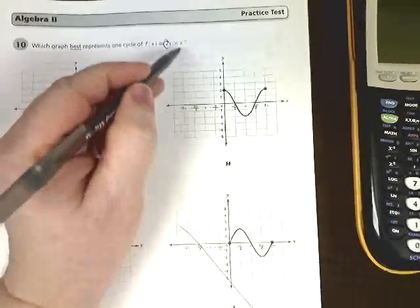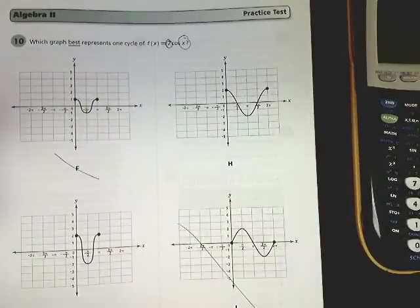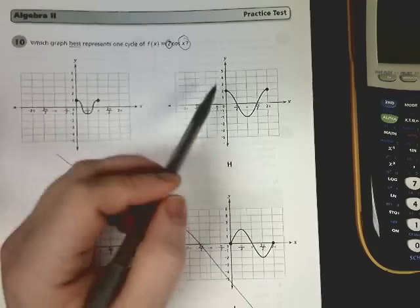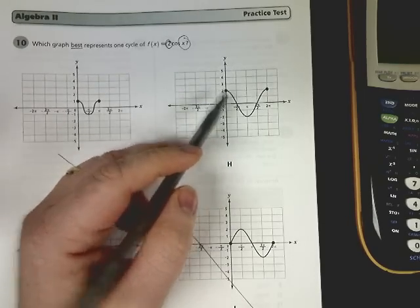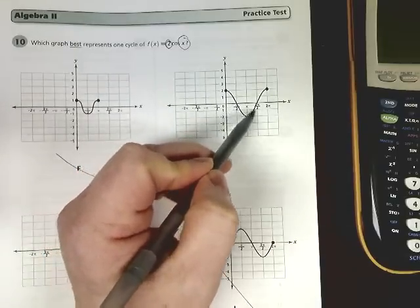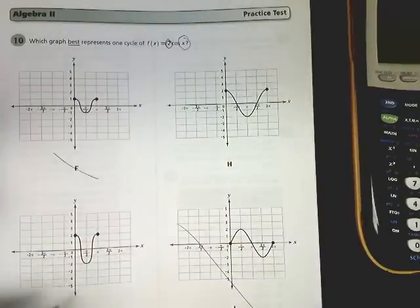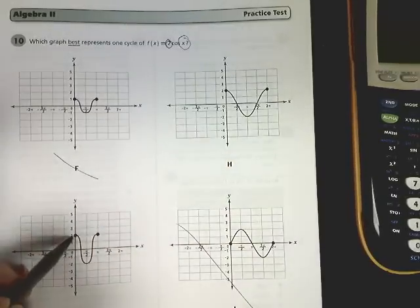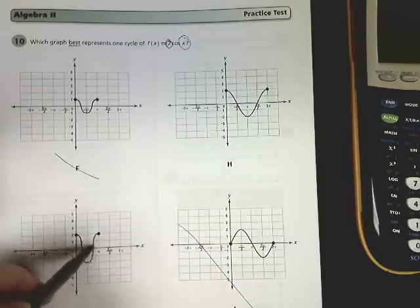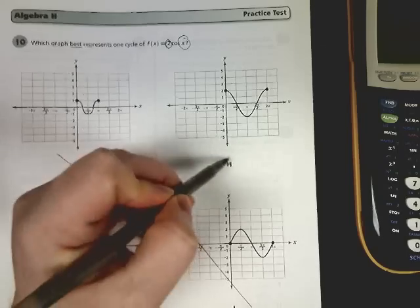Looking at the rest, we notice that x has no coefficient, which means the period has not changed. With cosine, the period is always 2π. We notice H goes around and starts repeating at 2π. But G, which was still an option, starts repeating at π, which can't be the choice. So it must be H.